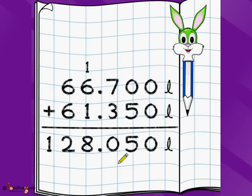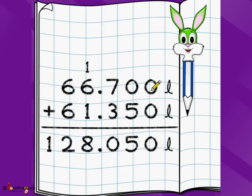Doing addition using decimal points is simpler as long as you follow a consistent unit in both numbers and the answer. Write decimals below each other and ensure you have three digits after the decimal because one liter is 1000 milliliters. If a number is smaller than three digits, add zeros before it — for example, 66 liters and 5 milliliters is written as 66.005. Start addition from the rightmost digit going left, and if the answer is greater than 9, the carry moves to the left digit.